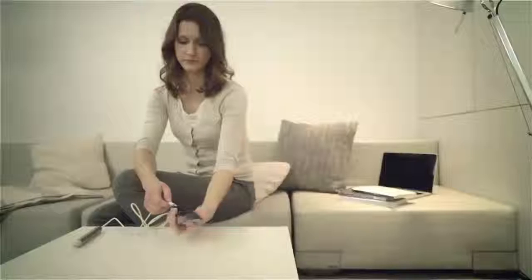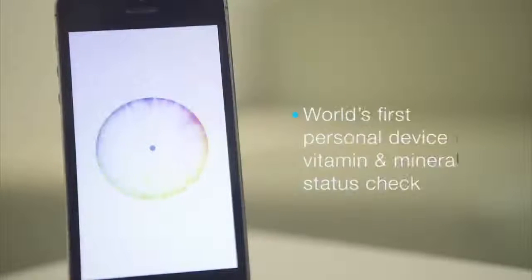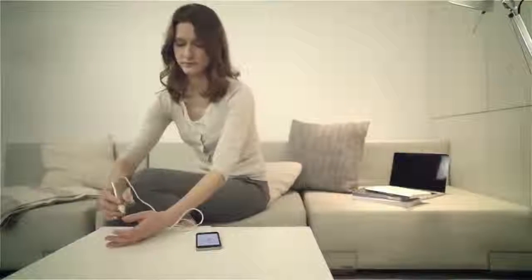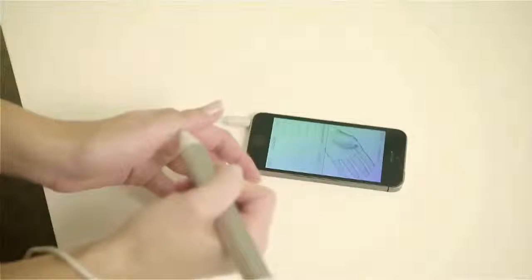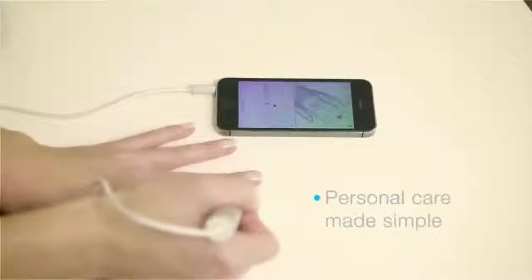VitaStick is the world's first personal device for checking your vitamin and mineral status that works with your smartphone. In just a few seconds, VitaStick reveals your body's vitamin and mineral levels.